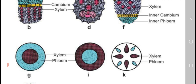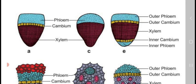Referring to the diagrams: the collateral vascular bundle based on presence and absence of cambium — first, the open collateral vascular bundle where xylem and phloem are arranged on the same radii with cambium present between them, called open collateral vascular bundle. The second is also a collateral vascular bundle but cambium is absent, called closed collateral vascular bundle.